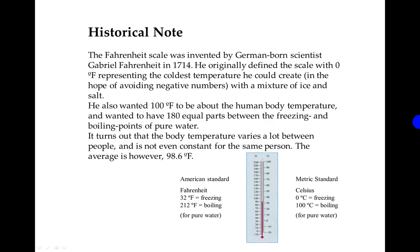The Fahrenheit scale was invented by German-born scientist Gabriel Fahrenheit in 1714. He originally defined the scale with zero degrees Fahrenheit representing the coldest temperature he could create — a mixture of ice and salt — in the hope of avoiding negative numbers. There is some controversy on these facts; some books will tell you a different way that he came about it, but this particular one is the most accepted.